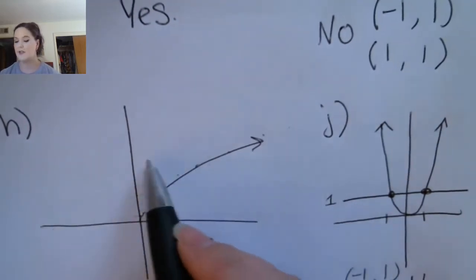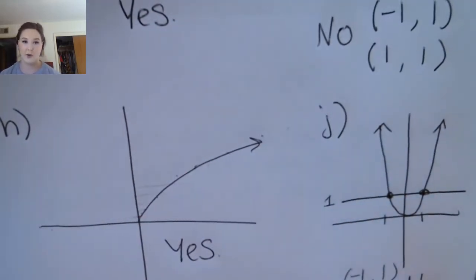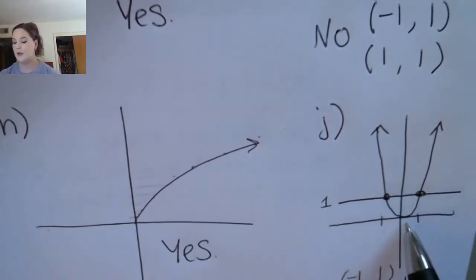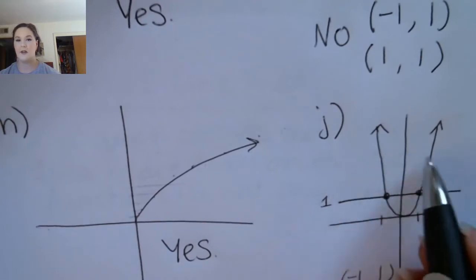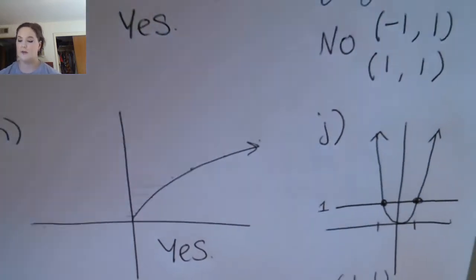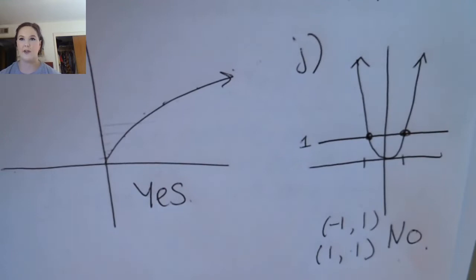On the first graph, each horizontal line has exactly one point of intersection, or down here, none. But on the second graph, all of these horizontal lines are going to have two points of intersection, meaning this is not a one-to-one function.